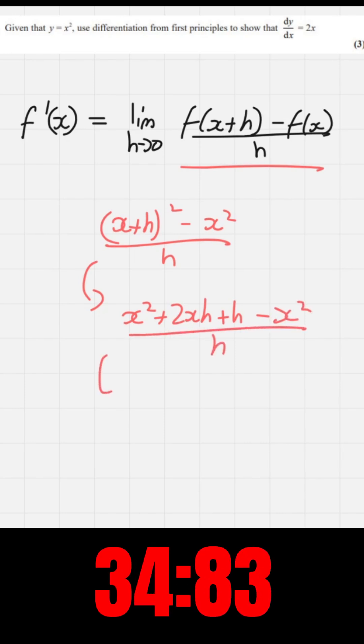We then further simplify this by cancelling out the x's and deriving by h to get 2x plus h.